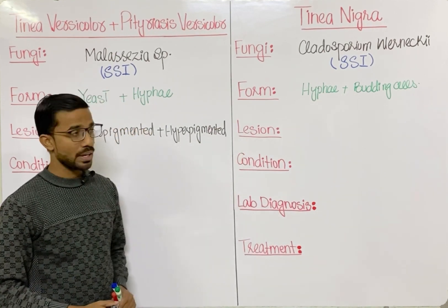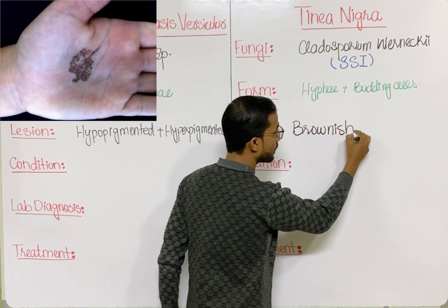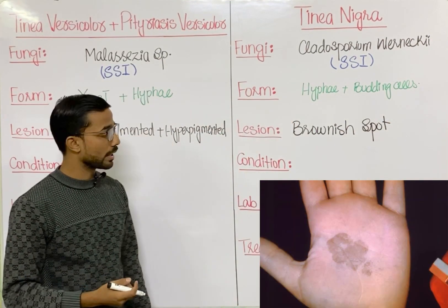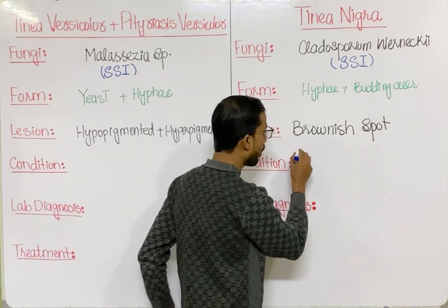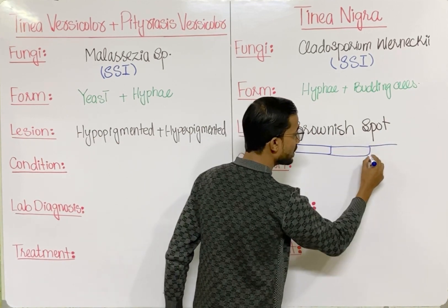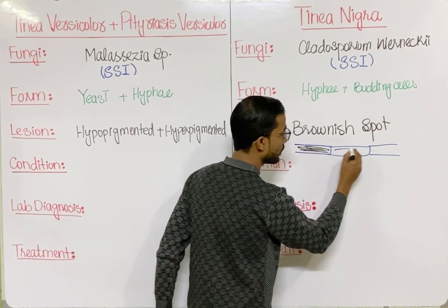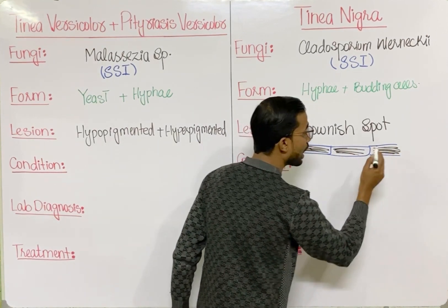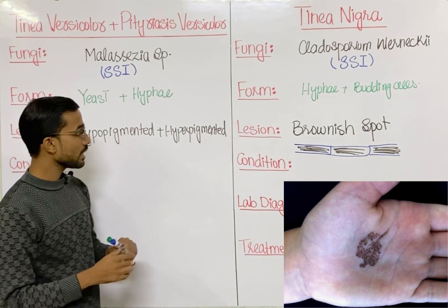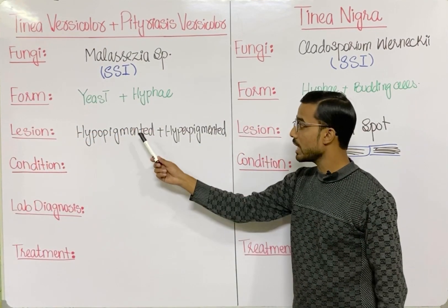In Tinea Nigra, you will see a brownish discoloration — it is hyperpigmented. In the substrate, there are depositions of a melanin-like pigment within the fungi, which is why the overall appearance is dark. That is the characteristic look of Tinea Nigra.